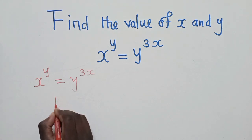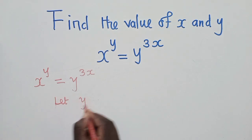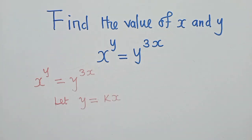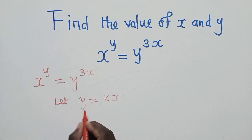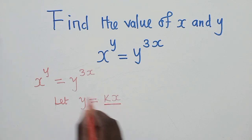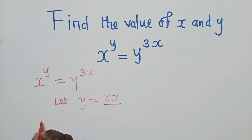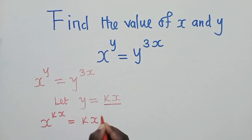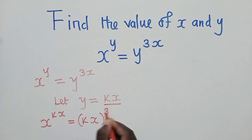We first need to say let Y be equal to KX. K there is the constant. So we're going to plug this wherever there is Y, and this is how it will look like: X power KX is equal to KX power 3X.